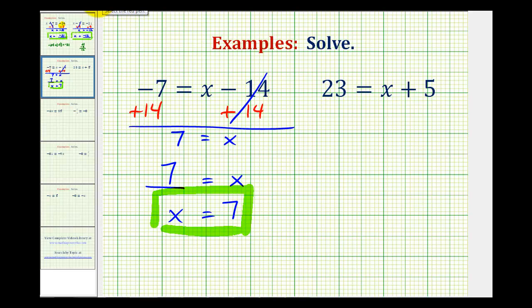Looking at the second example, we have 23 equals x plus 5, and again our goal is to isolate the variable on the right side of the equation in the form of some number equals x.